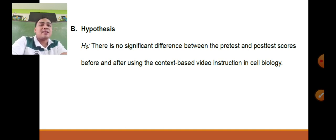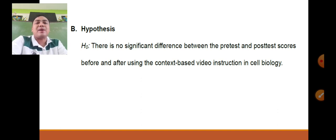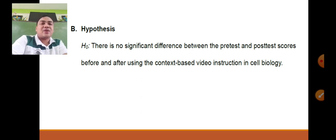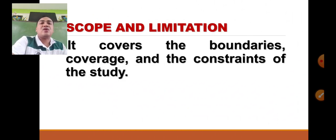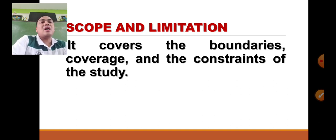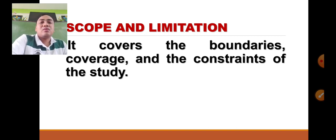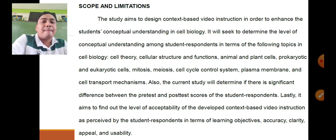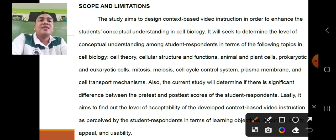This hypothesis needs to be tested first through statistics to prove whether the use of video lesson is valid or not. After formulating the hypothesis, write the scope and limitation. Scope and limitation covers the boundaries, coverage, and constraints of the study. Constraints refer to weaknesses of the study that impact the results. Boundaries and coverage refer to the main focus — for example, the topics of cell biology during the first semester only.